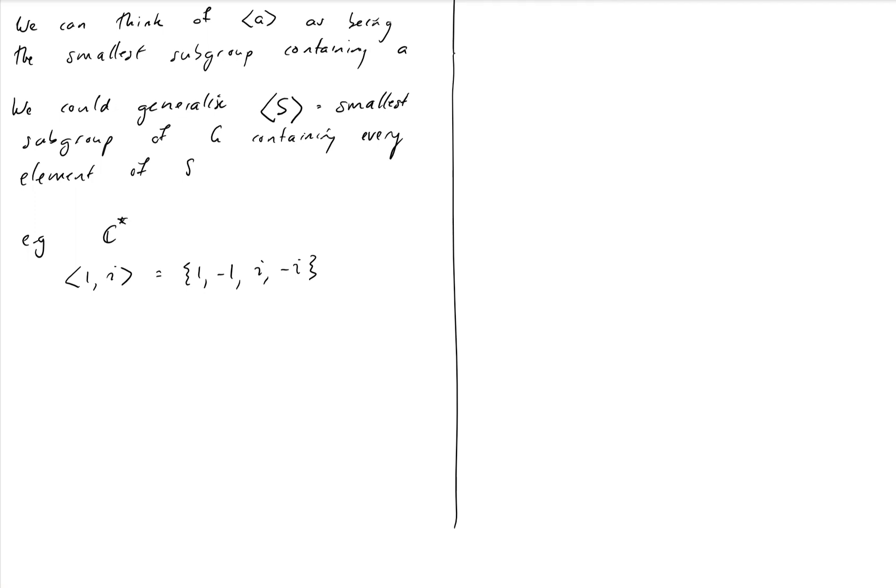Or in the regular C under addition, let's just make that clear that we're multiplying, the same set of numbers would actually generate the whole of the complex numbers because we can add any amount of 1 and any amount of i and we'll get what we get. So it's going to be A plus Bi will give us all of the complex numbers with integer coordinates. That would give us like a grid of dots on the complex plane.